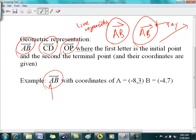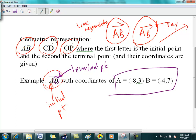When you have a vector like this, this is your initial point and this here is your terminal point. The coordinates are given to you, so it's easy to plot that.